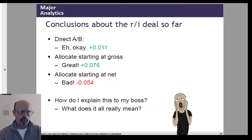So in summary, the direct A-B approach says, reinsurance is an okay deal, 0.011. If we start at gross and do the allocation method, it looks like a great deal. Reinsurance is a great deal, 0.076. If we start at net, reinsurance is a bad deal. We're losing 0.054 because we're buying reinsurance. And we're kind of stuck here with a little problem. What does this really mean? How do I explain this to my boss and his boss and everybody else? What is going on here?